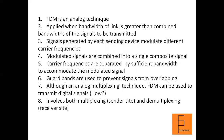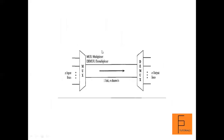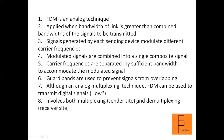In FDM, signals generated by each sending device modulate different carrier frequencies. These modulated signals are then combined into a single composite signal that can be transported by the link. Carrier frequencies are separated by sufficient bandwidth to accommodate the modulated signal, and channels can be separated by strips of unused bandwidth called guard bands.